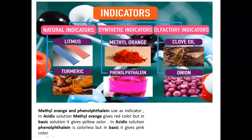The other type is the synthetic indicator. In synthetic indicators you can take methyl orange and phenolphthalein. Methyl orange in an acidic solution gives red color, but in a basic solution it gives yellow color. For phenolphthalein, in acidic solution it is colorless, and in basic medium it gives a pink color. So these are the synthetic indicators.